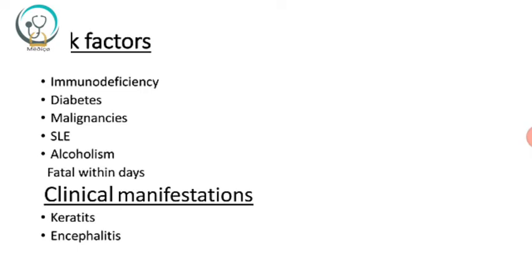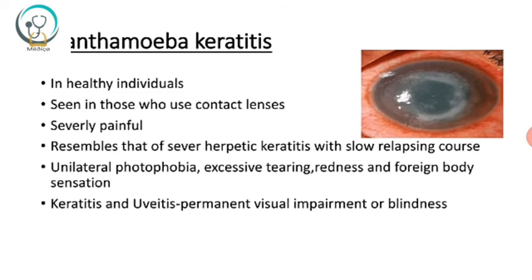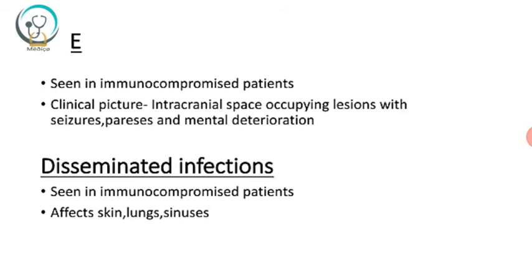Risk factors include immunodeficiency, diabetes, malignancies, SLE, and alcoholism; it is fatal within days. Clinical manifestations include keratitis and encephalitis. Acanthamoeba keratitis is seen in healthy individuals who use contact lenses. It is a severely painful condition resembling severe herpetic keratitis. Symptoms include unilateral photophobia, excessive tearing, redness, and foreign body sensation. This keratitis and uveitis can lead to permanent visual impairment or blindness.